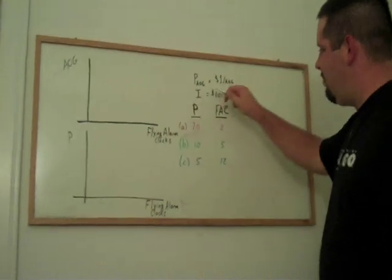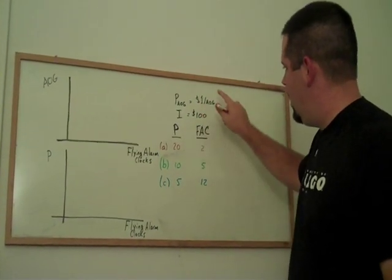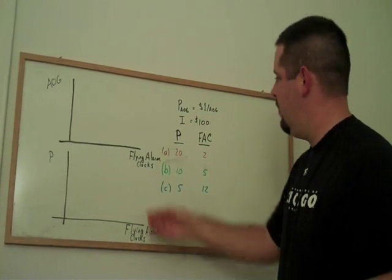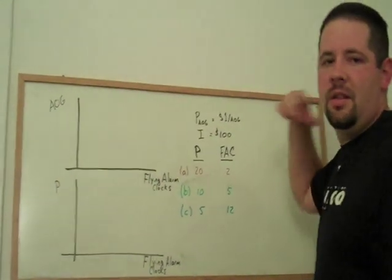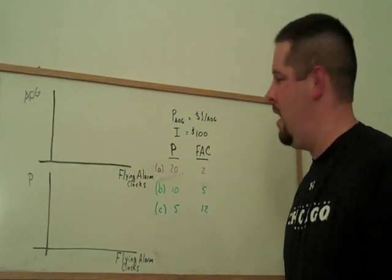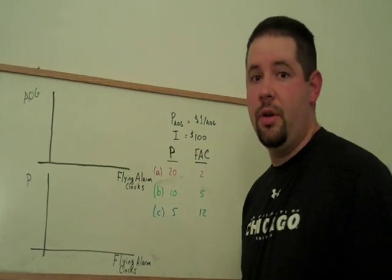Let's just get some practice in illustrating our optimal bundles. Here I've provided a table of information. We've got a couple of goods here. We've got flying alarm clocks and we've got all other goods.